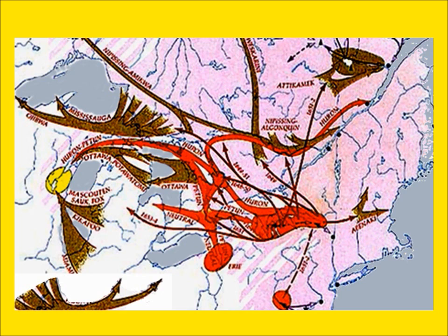The Great Lakes, to help you get your bearings, are on the left-hand side, lower corner of this map. You can see the great disruptions these wars caused to many of the people who lived in Ontario, Michigan, and the Ohio Country.